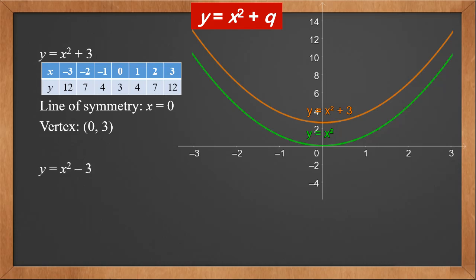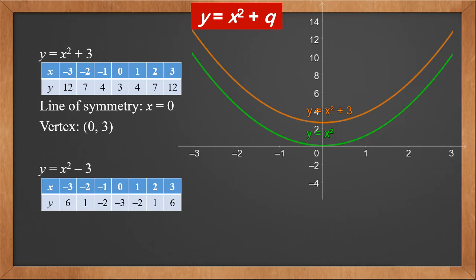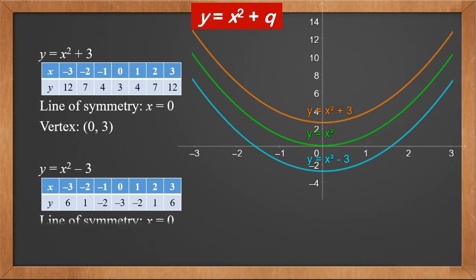Now let's look at y equals x squared minus 3. Compared with y equals x squared, each y value is smaller by 3 now. They are 6, 1, minus 2, minus 3, minus 2, 1, 6. Plotting all points, we can see that it's actually y equals x squared moved down along the y axis by 3 units. The line of symmetry is still x equals 0, and the vertex becomes (0, minus 3).